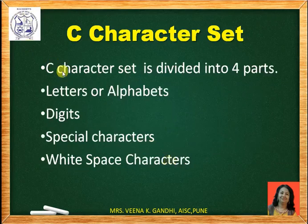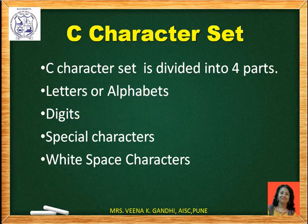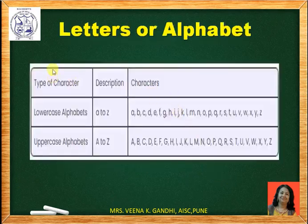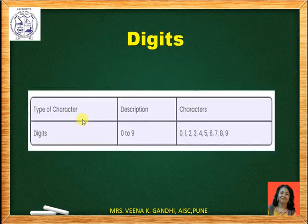C character set is divided into four parts: letters or alphabets, second digits, third special characters, and fourth white space characters. Letters or alphabets — C character set uses lowercase and uppercase alphabets to form a variable name, identifiers, etc. It uses 0 to 9 digits for forming the numbers.